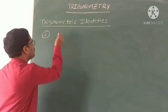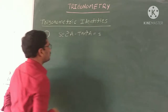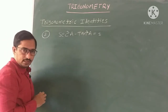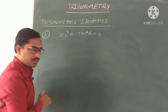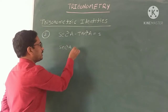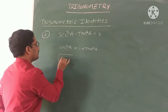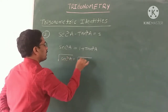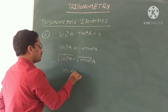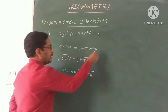Now the second identity: sec²A - tan²A = 1. From this, express sec in terms of tan and tan in terms of sec. Transposing tan²A to the right side: sec²A = 1 + tan²A. Applying square root on both sides: sec A = √(1 + tan²A). So sec expressed in terms of tan.